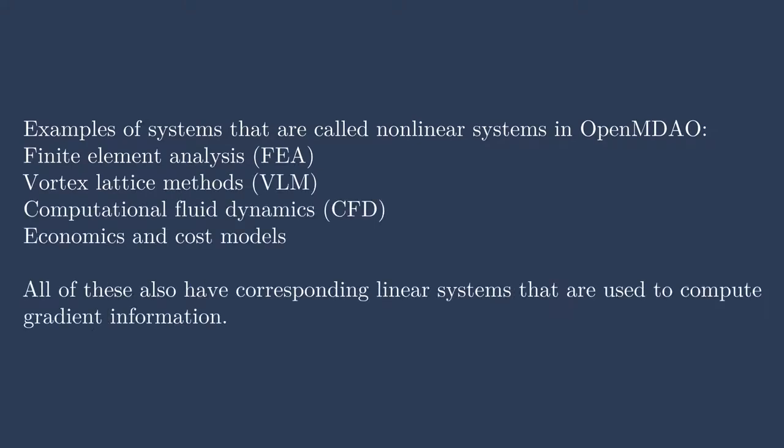Some examples of things called nonlinear systems in OpenMDAO: finite element analysis (FEA) is a nonlinear system — it models physics we're representing digitally. Vortex-Lattice methods for aerodynamics are also a nonlinear system, despite being fully linear. Computational fluid dynamics (CFD) is a nonlinear system. Economics or cost models — like ticket prices or wind turbine sales — may appear linear, but are still called nonlinear systems in OpenMDAO because they represent actual performance you're trying to measure. And if you construct any of these in OpenMDAO, there is always a corresponding linear system computing gradient information.